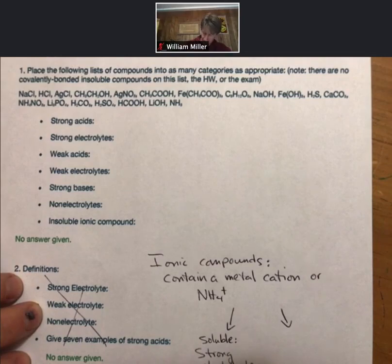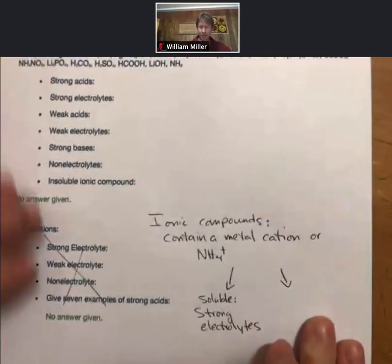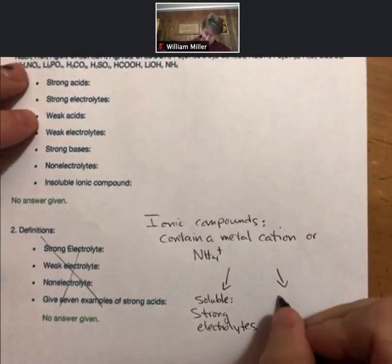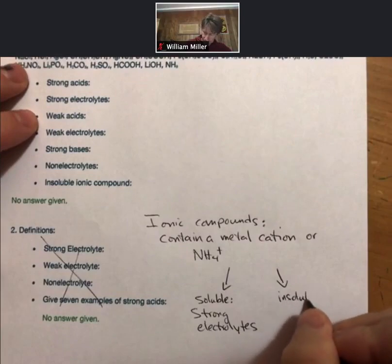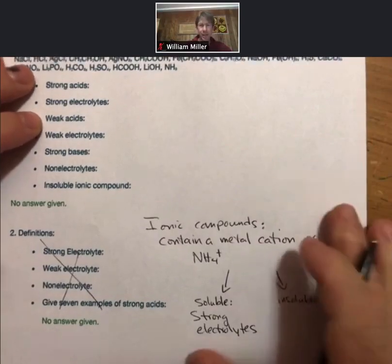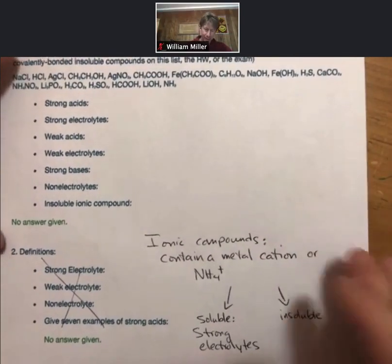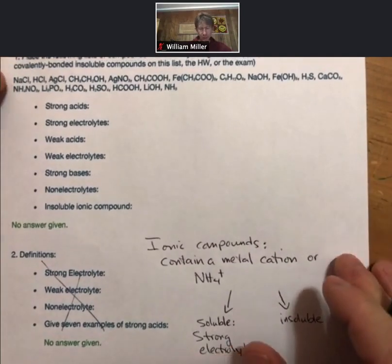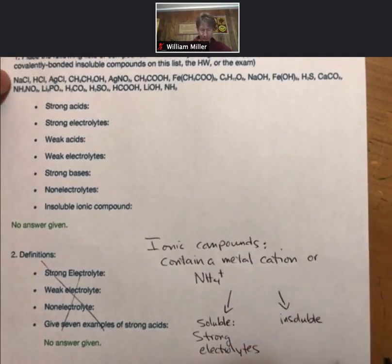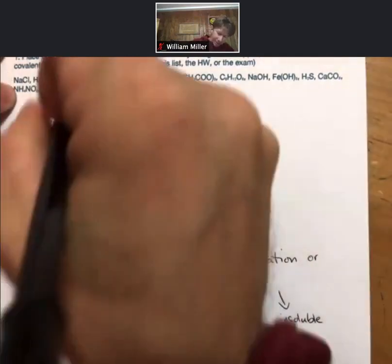They can be soluble, in which case they are strong electrolytes and they break up 100% into ions. Or they can be insoluble and not dissolve at all. Rule number one says group one compounds are always soluble, and sodium is a metal cation. So that's going to go into the strong electrolytes category.